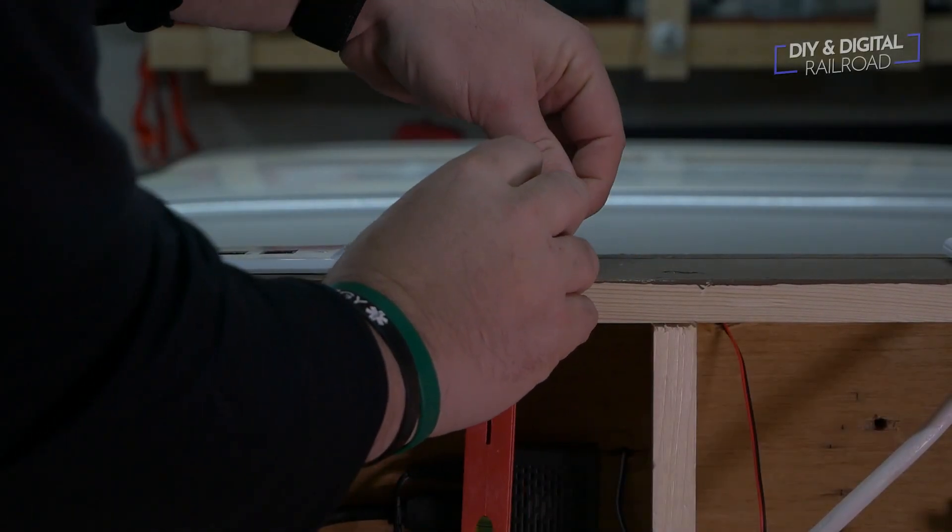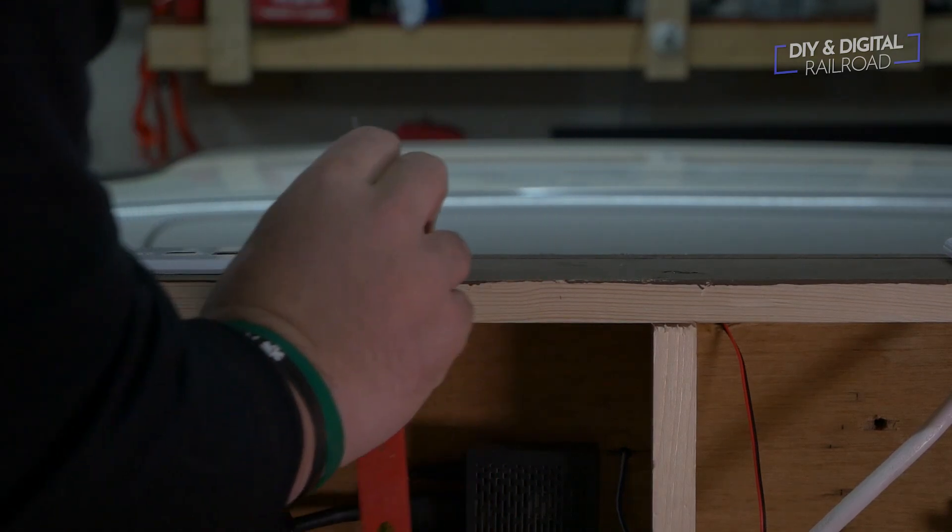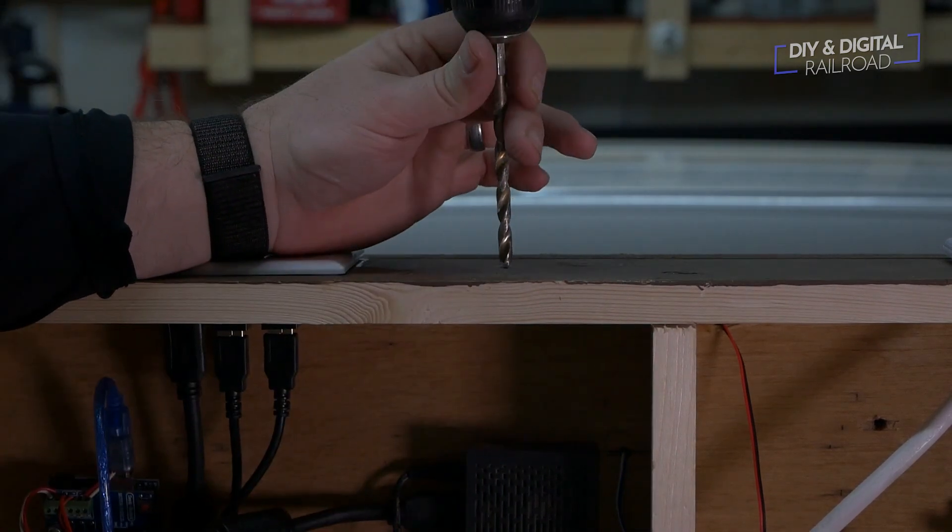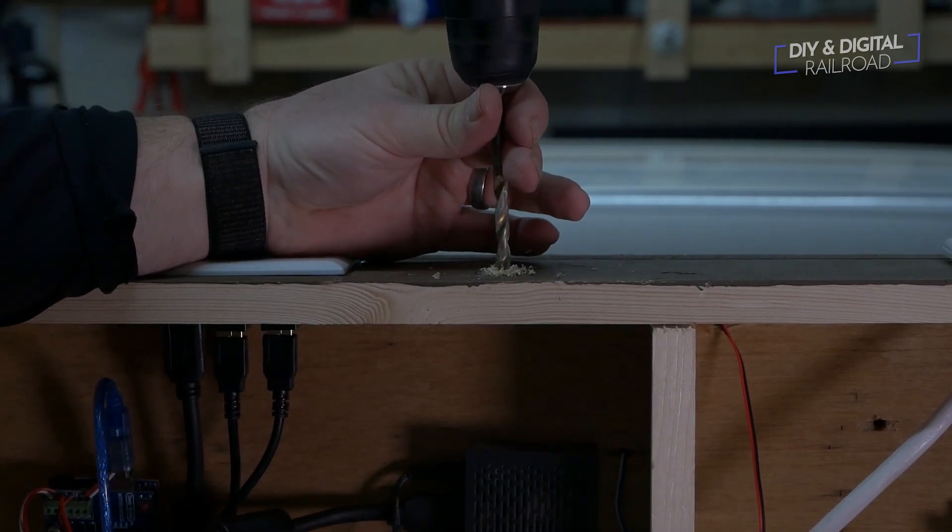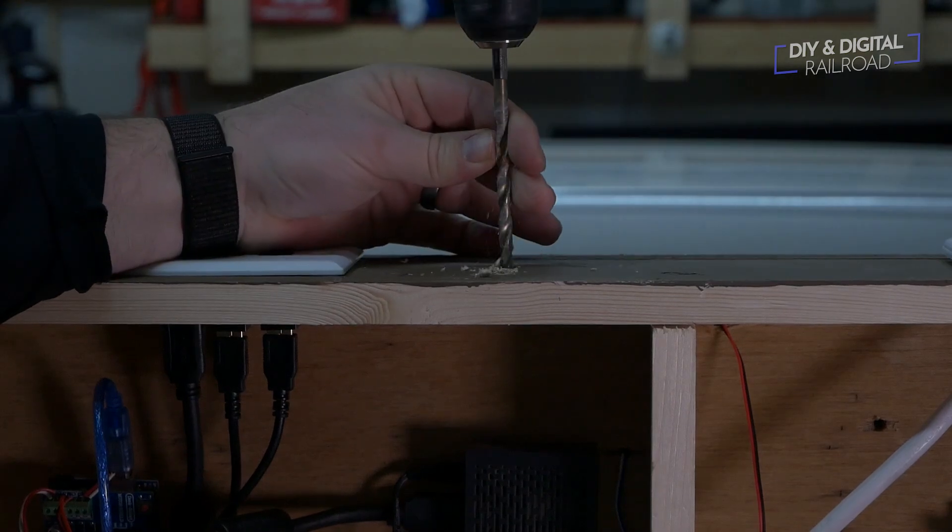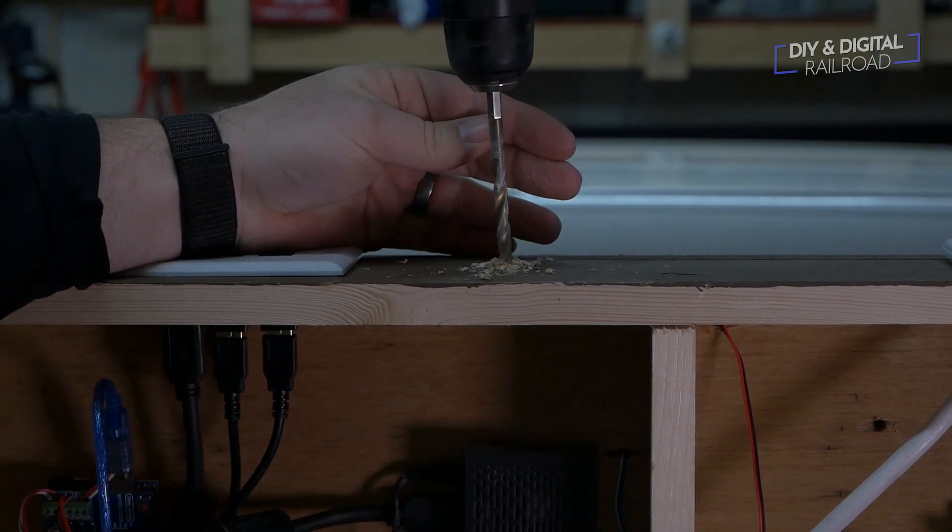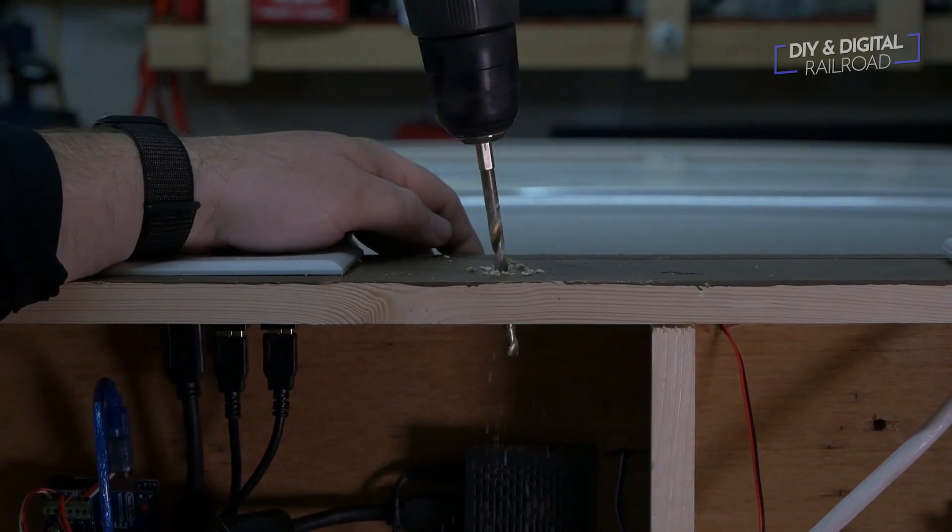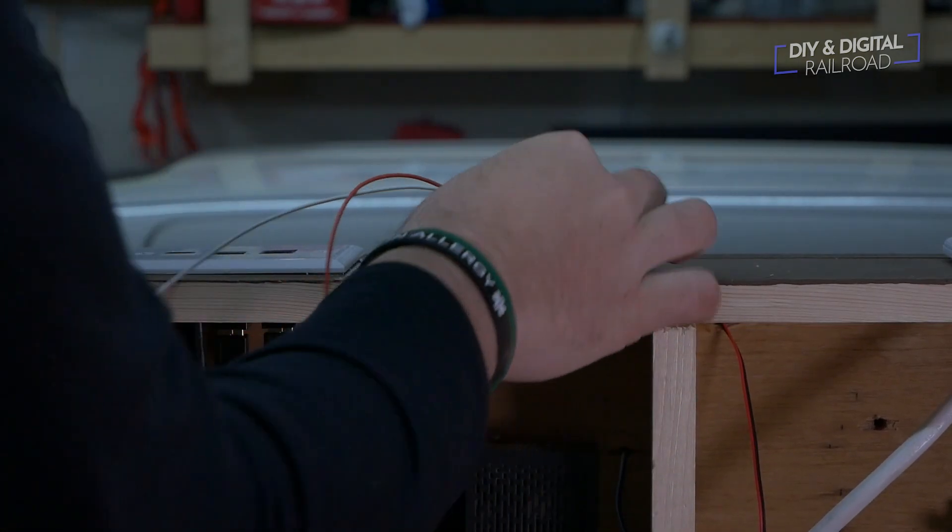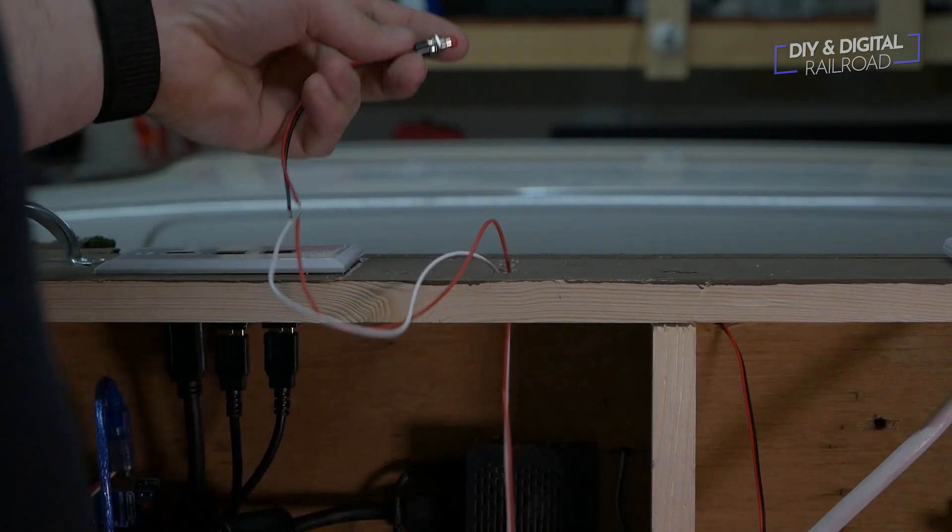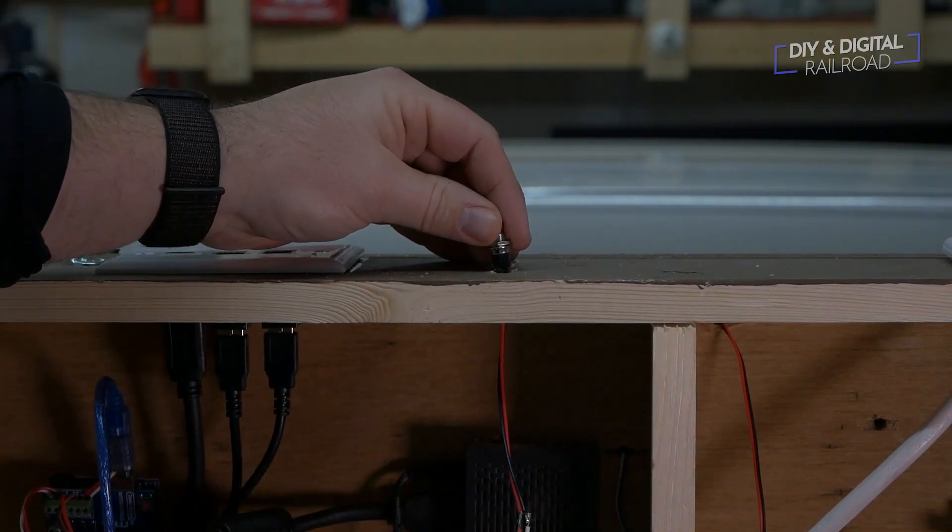Now I drill the holes for the buttons. I use a straight edge to make the holes align. I drill them with a quarter-inch drill bit and you may have to make the holes slightly larger depending on the fit of the button. I then run the wires for the buttons and install them. Because it's such a snug fit I'm able to just pop the buttons in place.